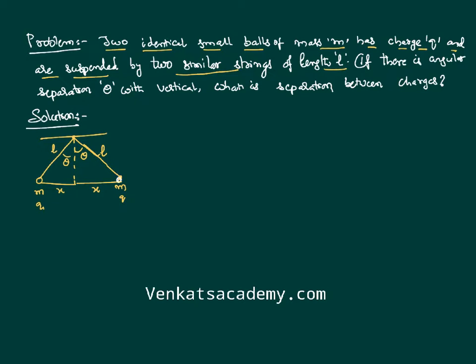Let's identify the forces acting on a bob — on the small mass — at any instant when they are in equilibrium. We know its weight acts in the downward direction. Between the two charges there is a repulsion force F. The string becomes taut, which gives a tension T.